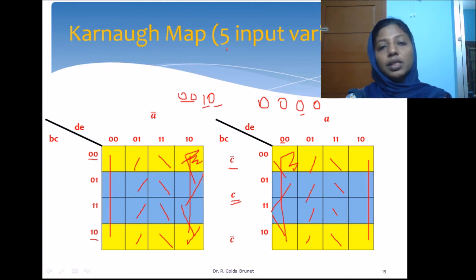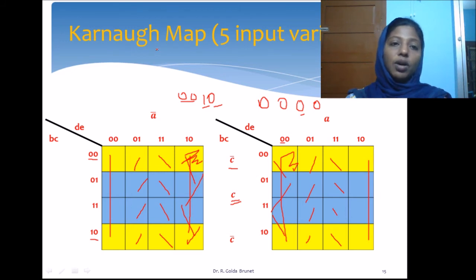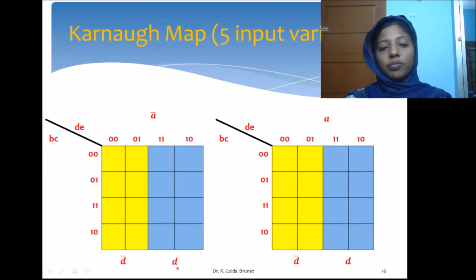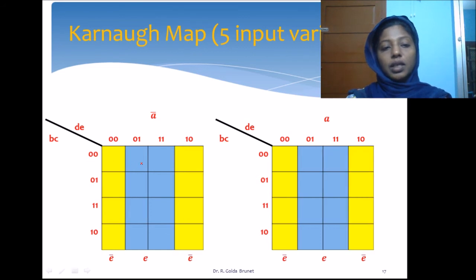When the number of variables increases, finding adjacency and using the Karnaugh map becomes difficult, and there is one more alternative to the Karnaugh map that is also systematic for simplifying Boolean expressions. Grouping all the yellow cells together gives D-bar, and grouping all the blue cells together gives E-bar. Grouping all the corner columns yields another block of 16 yellow cells giving E-bar.